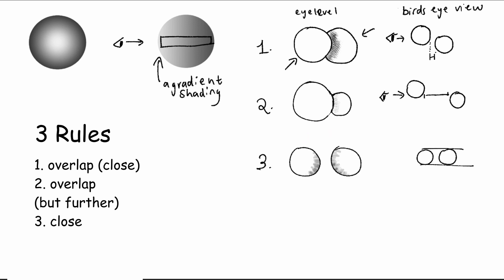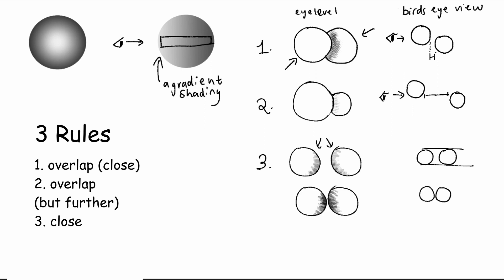Lastly, the third rule: close. When two objects are close and parallel to each other in a broadside view — not behind or not in front — they create a shade over here. And the more closer the objects are, the stronger the shade; the more far apart, the lighter the shade.